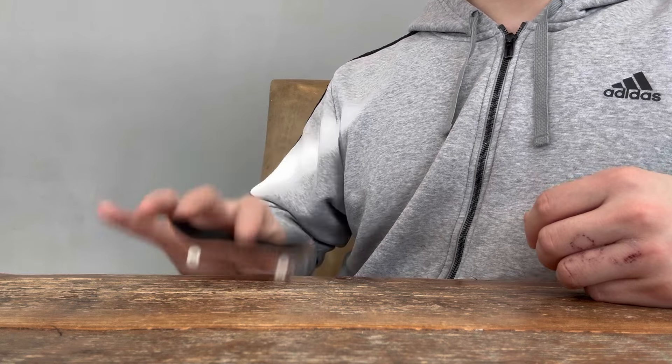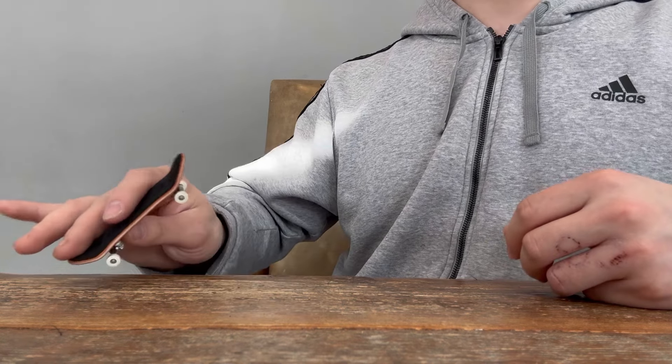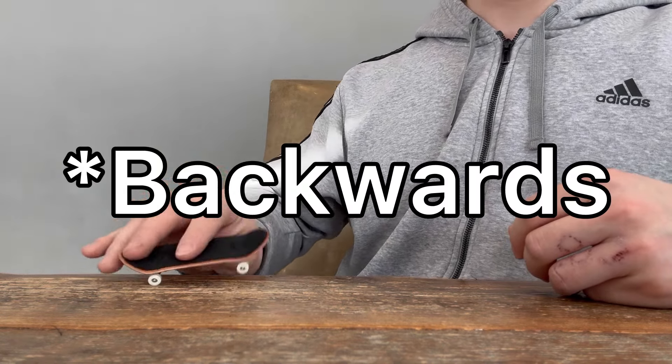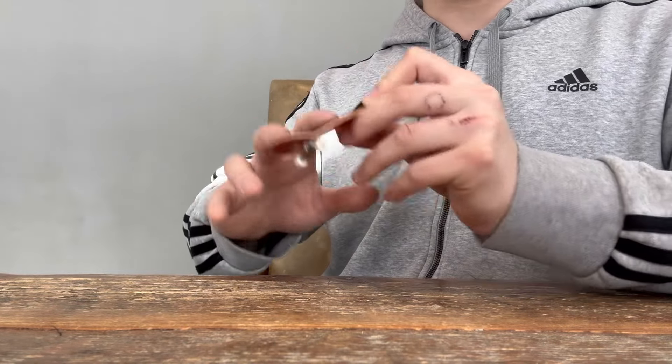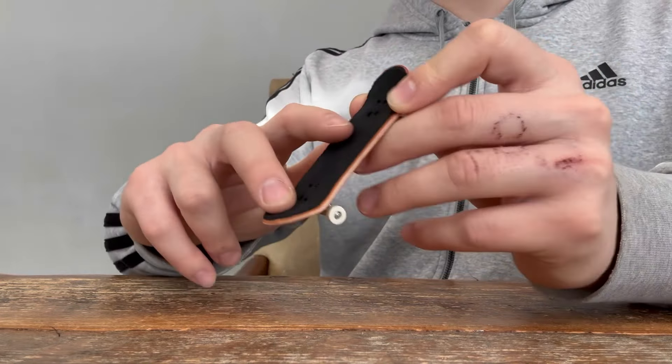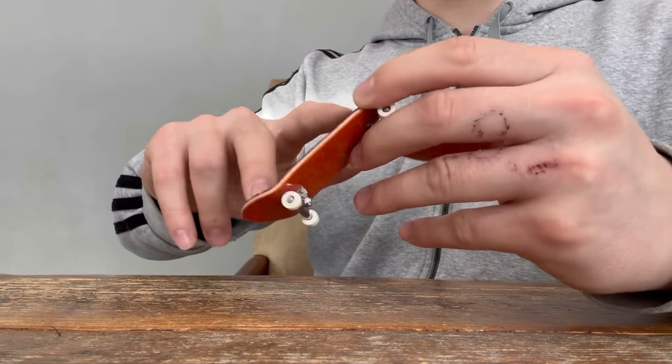Those are pretty difficult to do. So the other thing you want to have is you want to kind of send the board forward as you're going up. That gives the board some downward force and it makes it go backwards to where it really magnetizes itself to your fingers which is going to make you have really good control.